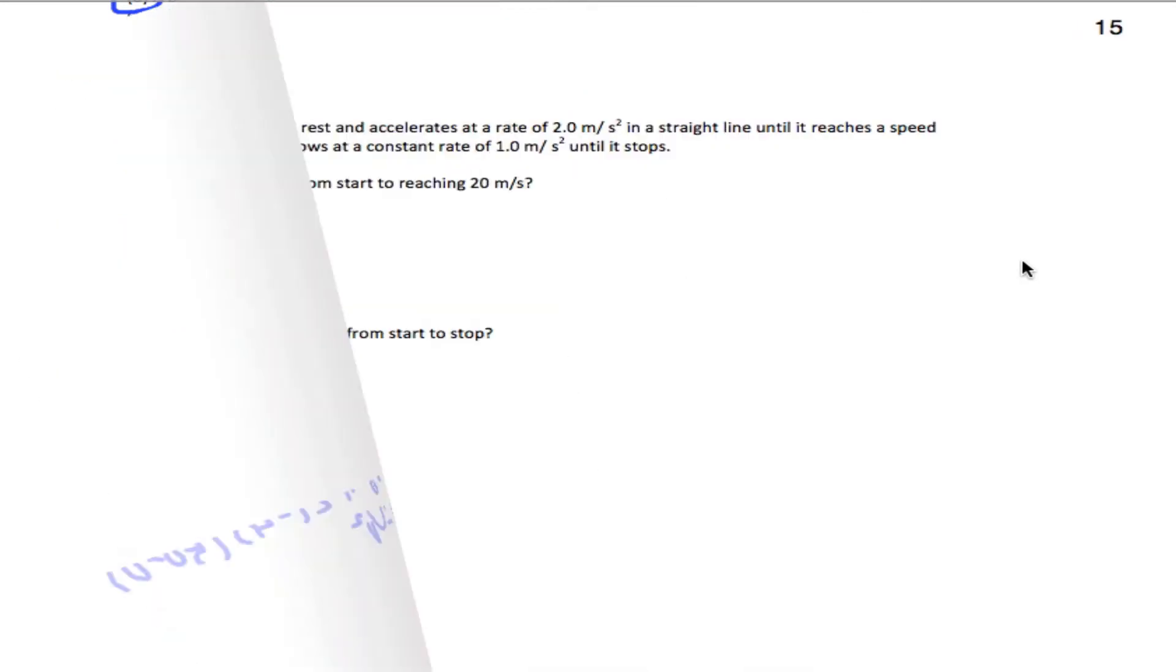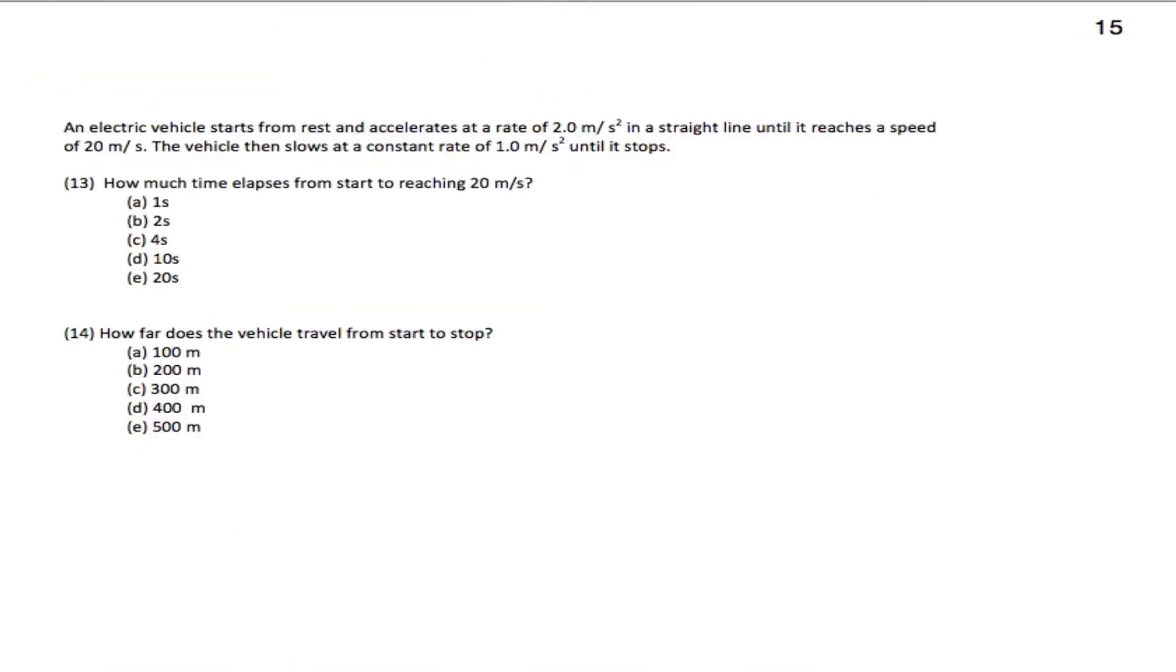Alright, continuing on. We have an electric vehicle starting from rest and accelerating at a rate of 2 meters per second squared in a straight line until it reaches a speed of 20 meters per second. The vehicle then slows down at a constant rate of 1 meter per second squared until it stops. How much time elapses from start to reaching 20 meters per second?